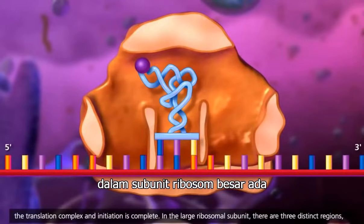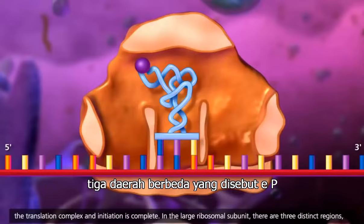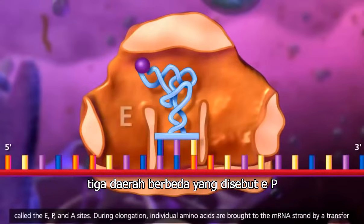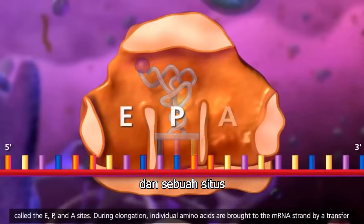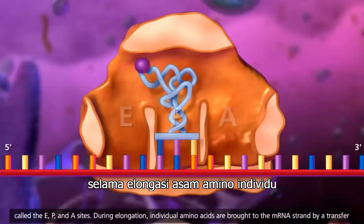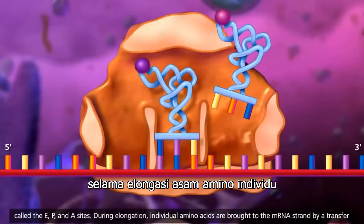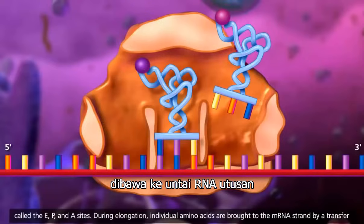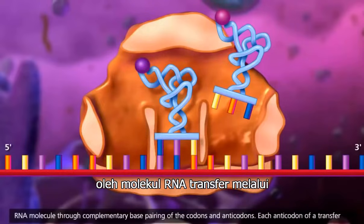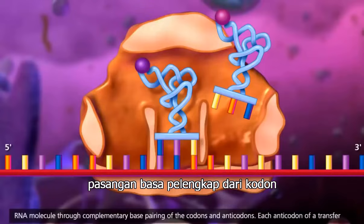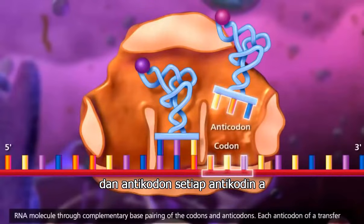In the large ribosomal subunit, there are three distinct regions called the E, P, and A sites. During elongation, individual amino acids are brought to the messenger RNA strand by a transfer RNA molecule through complementary base pairing of the codons and anticodons.